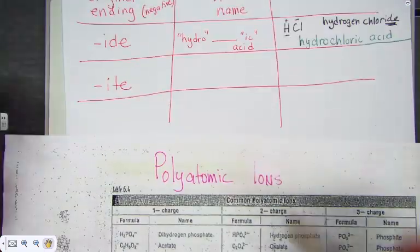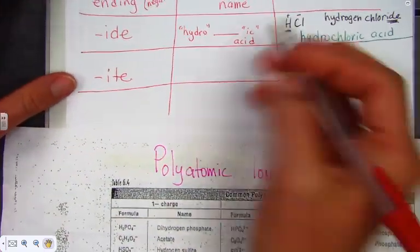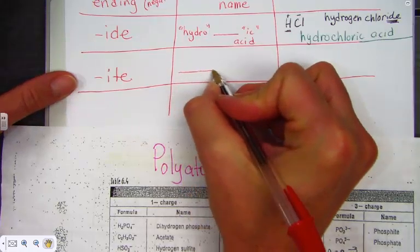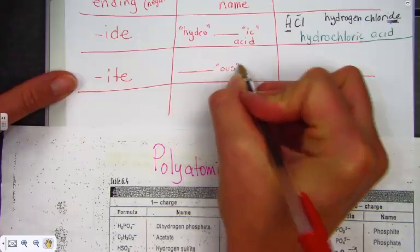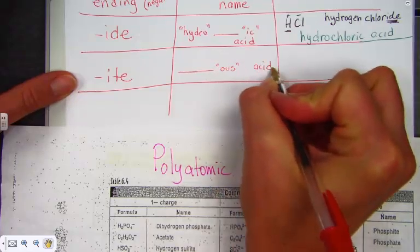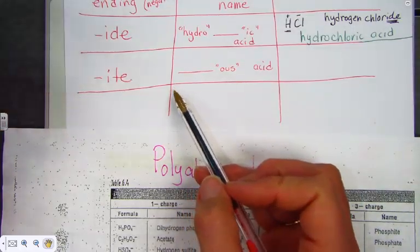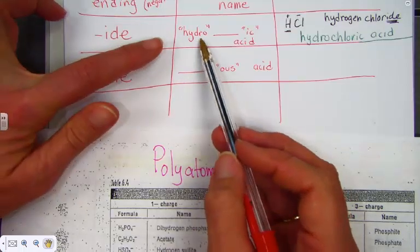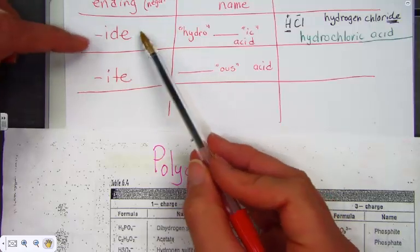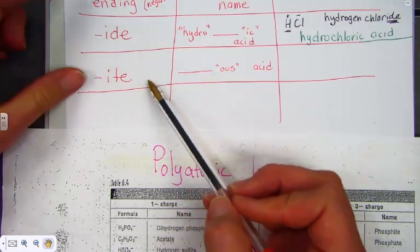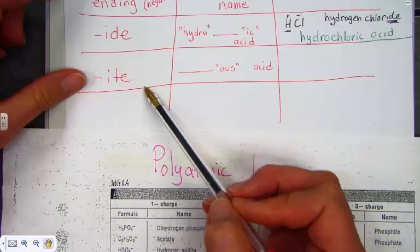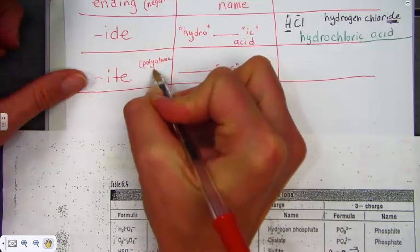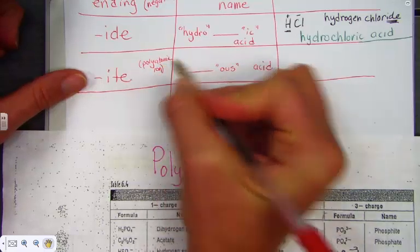So, let's just take -ite as an example. The rule says to name now as an acid, we go straight to the root word and turn the -ite to -ous acid. Notice, very important, there is no prefix hydro. Hydro is only heard when the original ending were -ide. If the original ending were an -ite, it came from a polyatomic ion, didn't it?